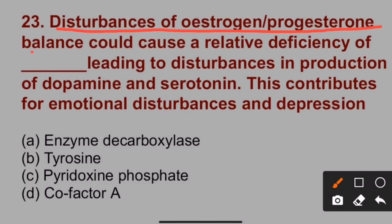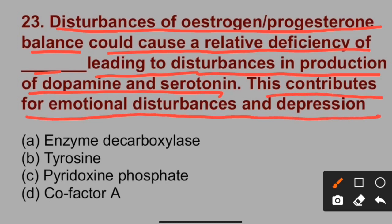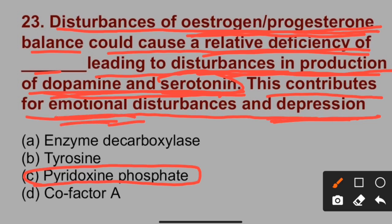Question number 23: Disturbances of estrogen-progesterone balance could cause relative deficiency of pyridoxine phosphate, leading to disturbances in the production of dopamine and serotonin. This contributes to emotional disturbances and depression. When there is an imbalance between estrogen and progesterone, it leads to relative deficiency of pyridoxine phosphate. When pyridoxine phosphate is deficient, production of dopamine and serotonin is disturbed, leading to depression and emotional behavior. So option C is correct.